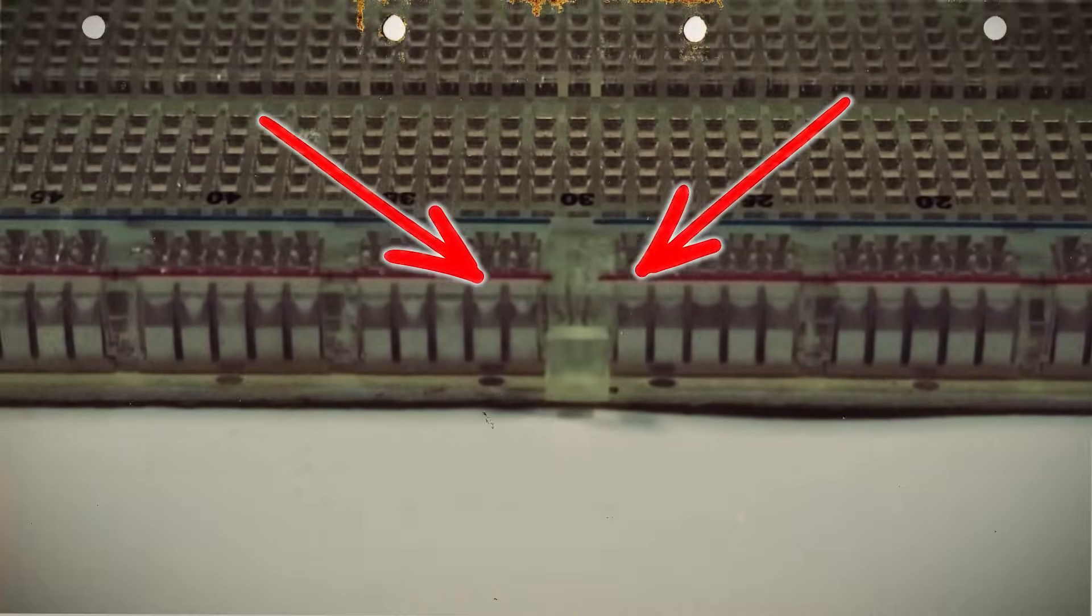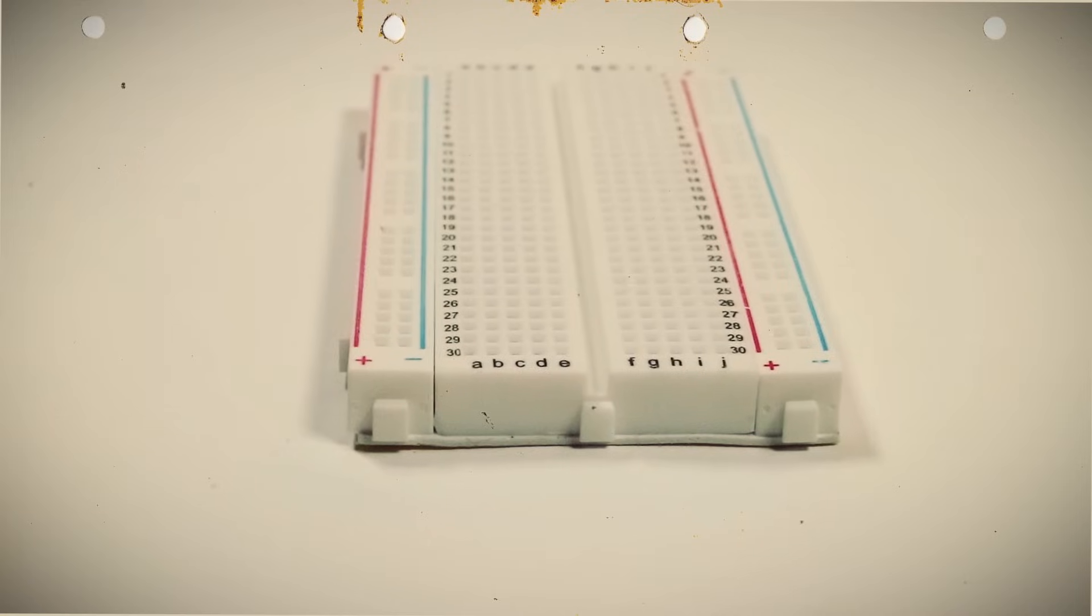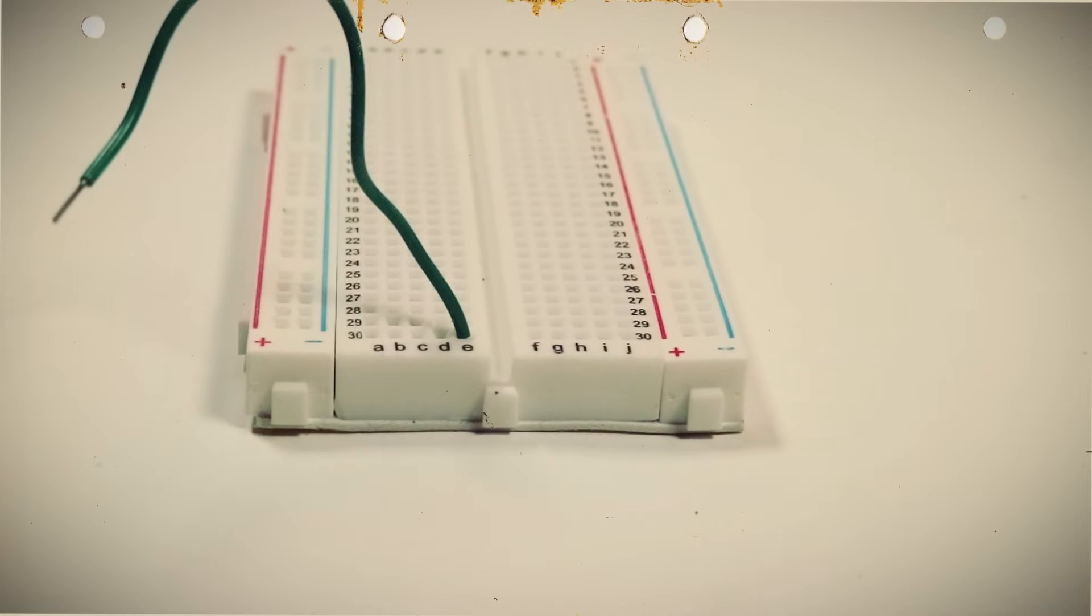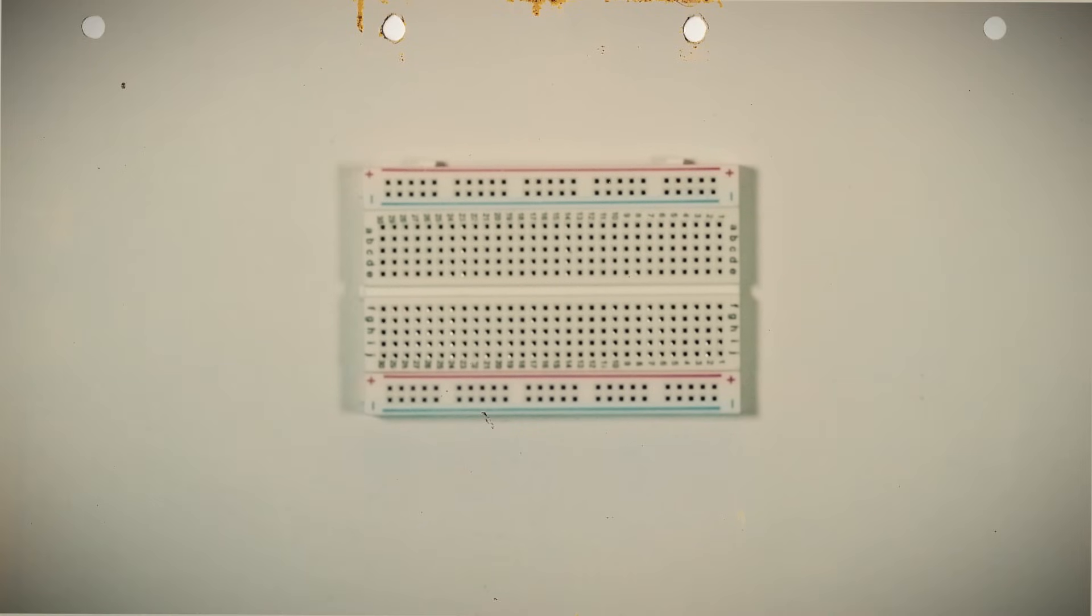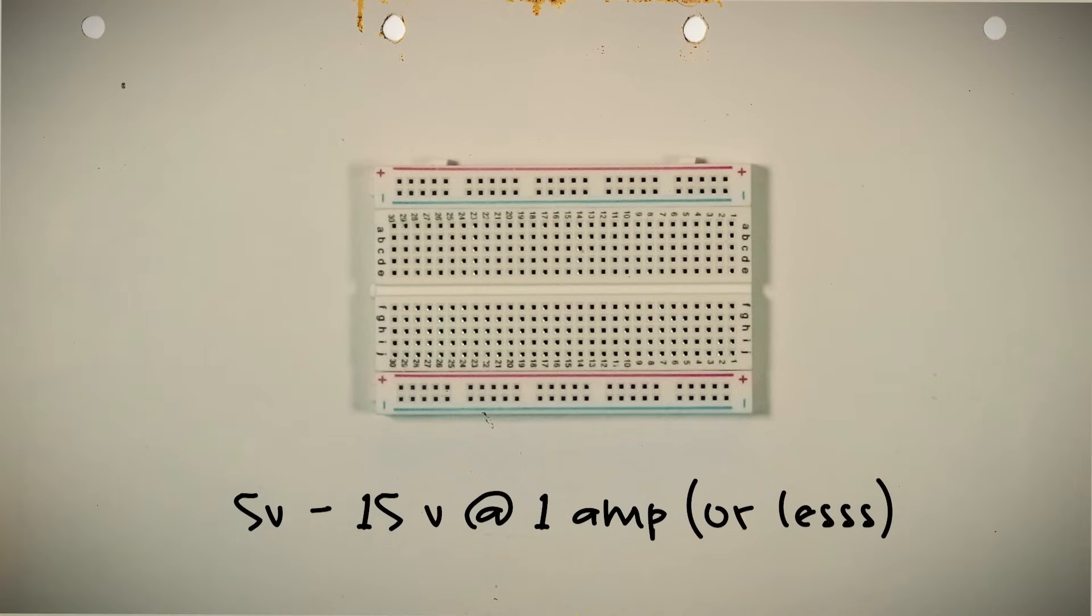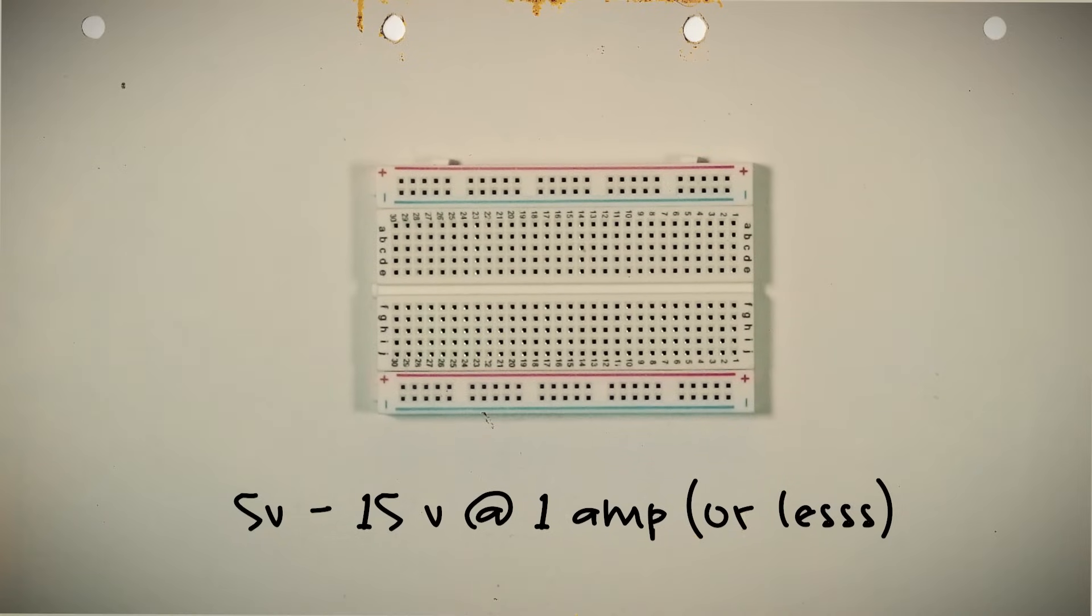In order to supply power to the rails, 22 and 23 gauge wires are commonly used because they fit nicely in the holes. As far as the power supply goes, most common breadboards are rated for 5 to 15 volts at 1 amp or less, but be sure to check your breadboard specifications to be sure.